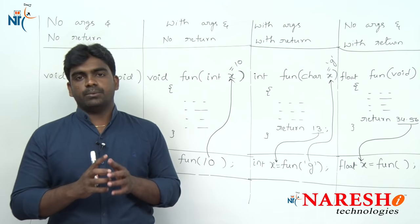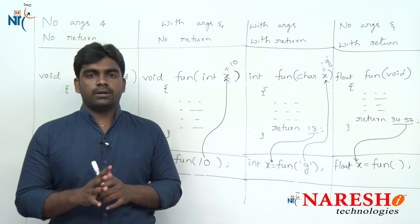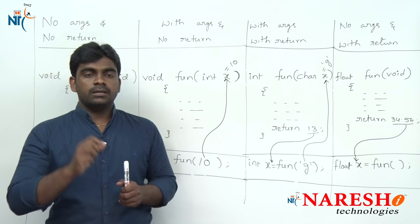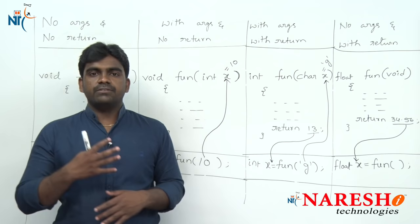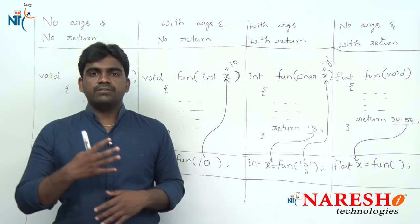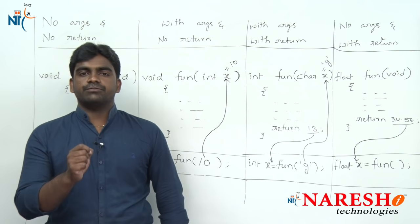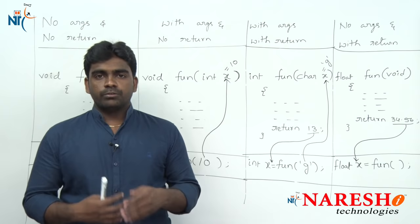Only these four classifications are available for every function — remember, not only for C language, but in any programming language, any method you define will use one of these four classifications. If you are perfect at all four classifications, then we can start programming. In the next session, we will see how to write a first C application. Thank you for watching, and subscribe for more videos.